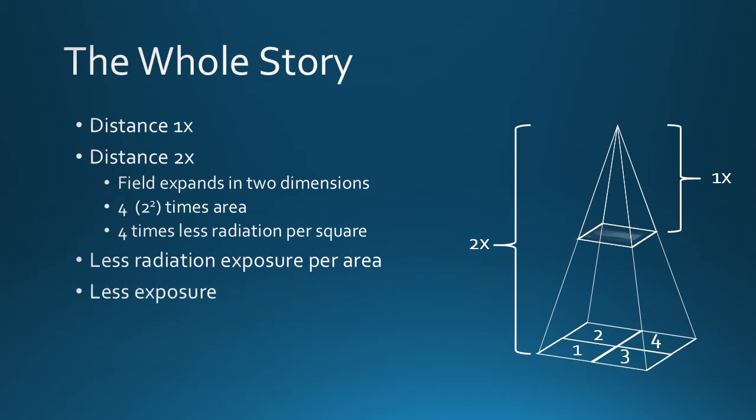Each square receives one quarter of the amount of radiation. If we were to radiograph a foot at the new distance without compensation, it would be underexposed by a factor of four times. And from the standpoint of personal dose, it would be reduced by a factor of four times.